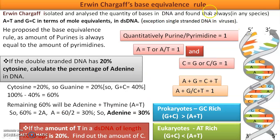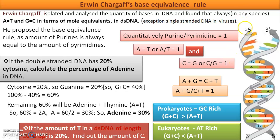Another type of question, common in bioinformatics: given a DNA strand, determine whether it is GC-rich or AT-rich. If G + C is greater than A + T, it is GC-rich. Generally, prokaryote DNA is GC-rich. If G + C is less than A + T, it is AT-rich. Eukaryotes are mostly AT-rich.